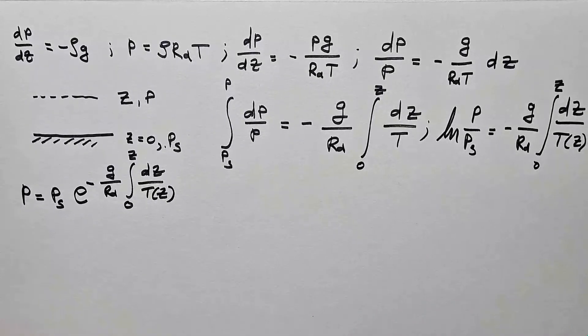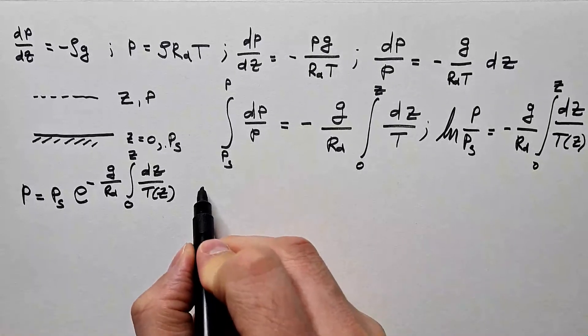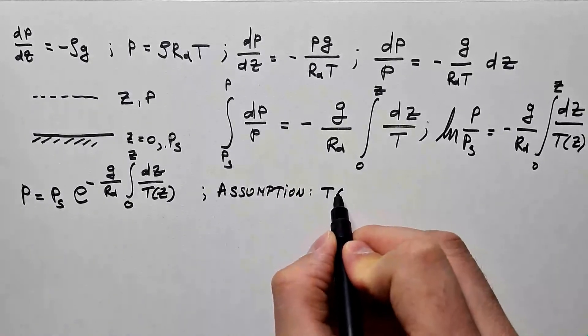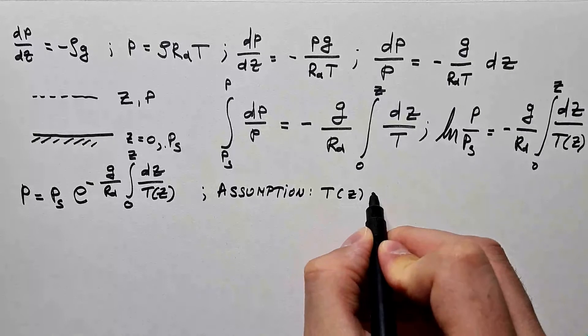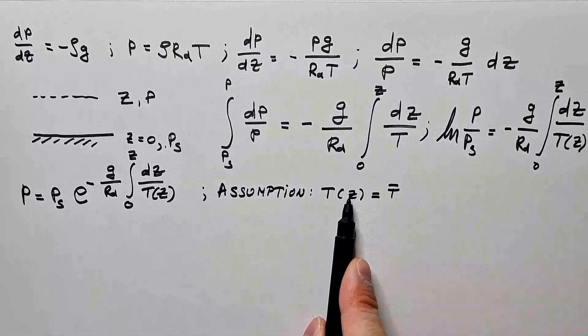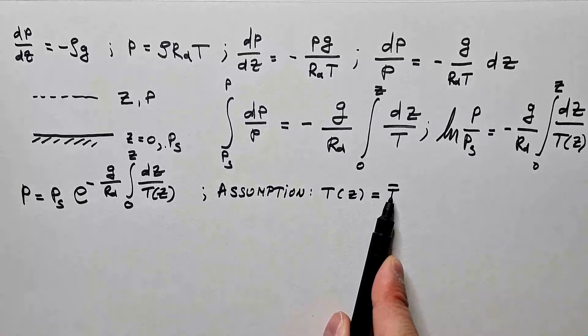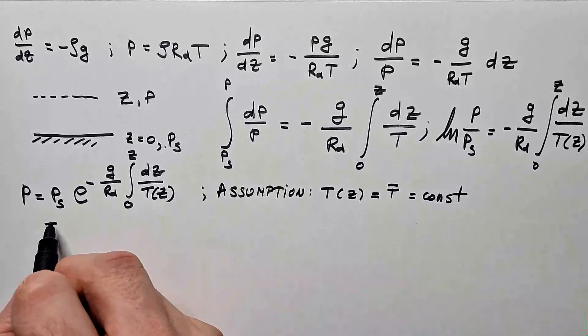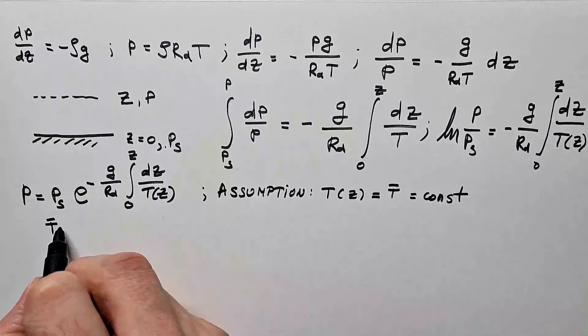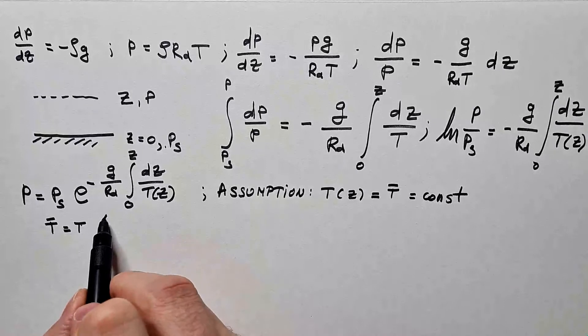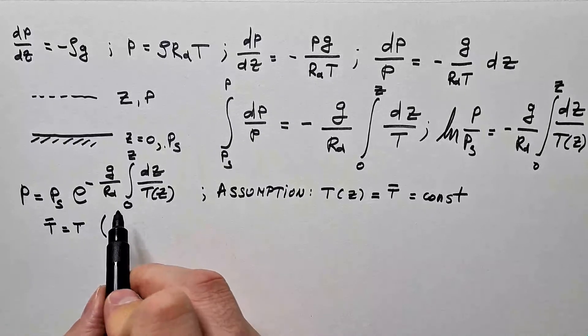Now, let's assume that temperature as a function of height is actually constant. In other words, it is not function of height, it's just a number. However, this assumption that the mean temperature is actually temperature, or the temperature is mean temperature, is called isothermal atmosphere.